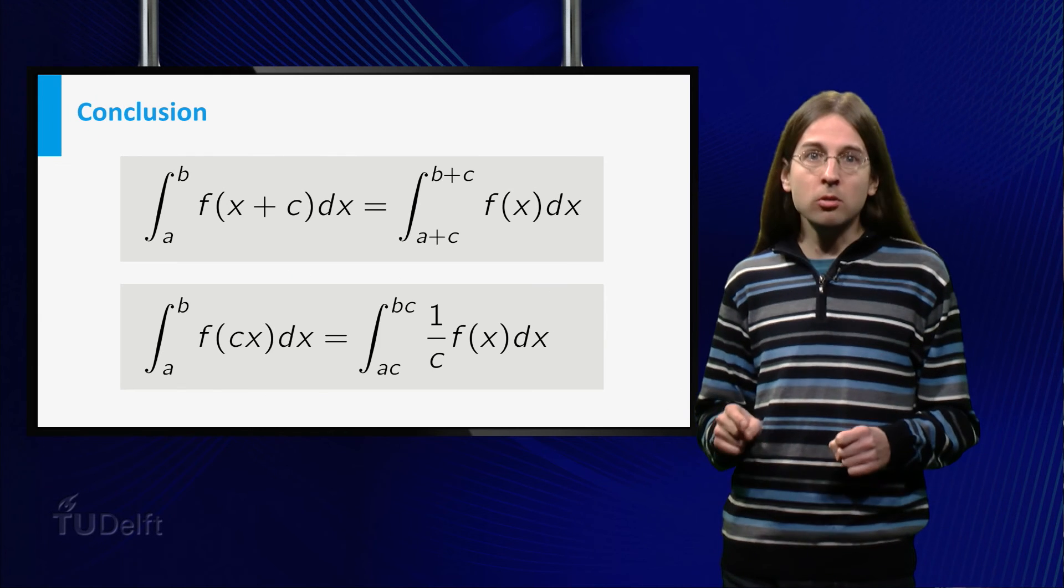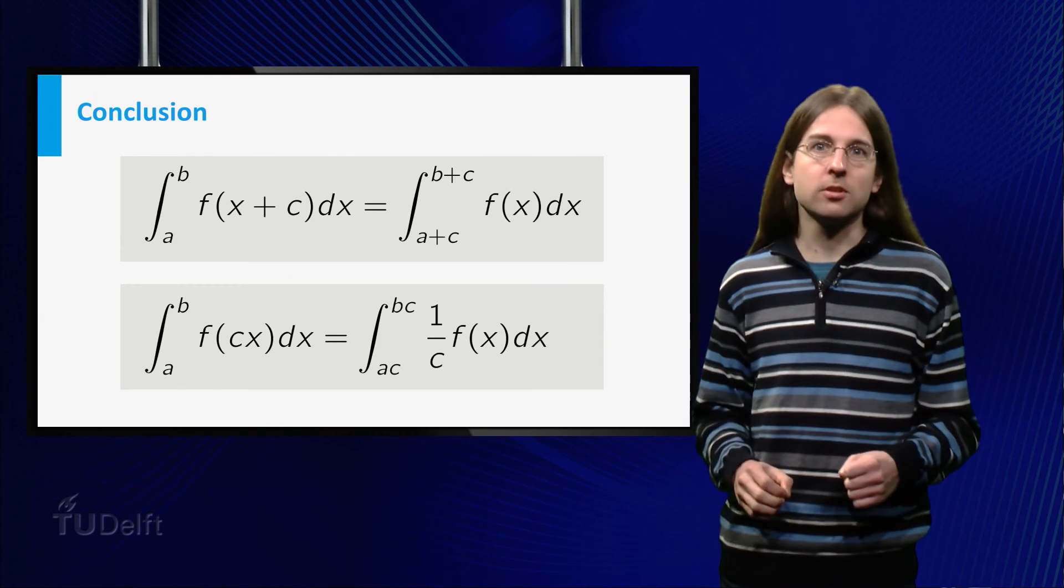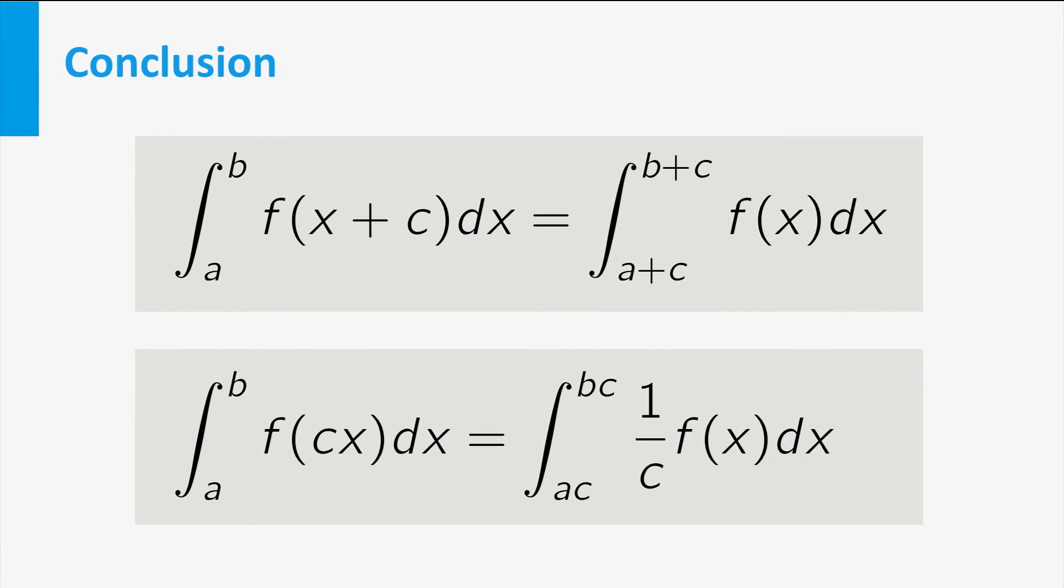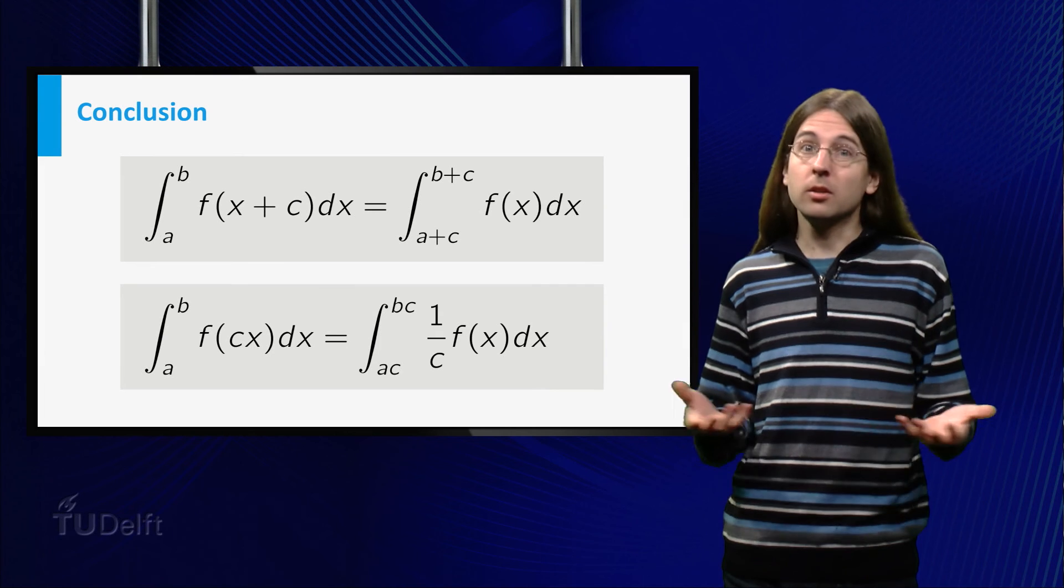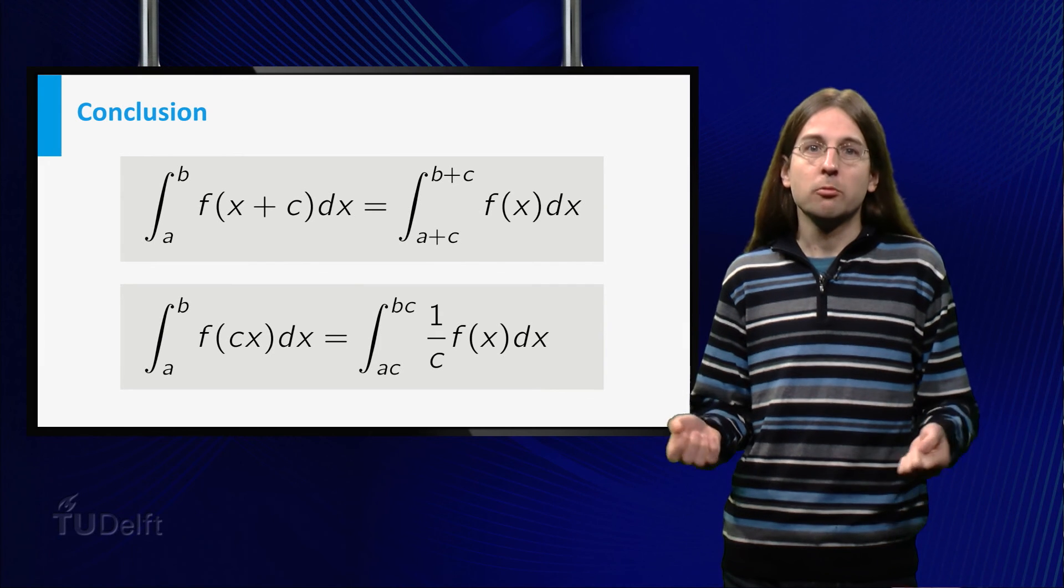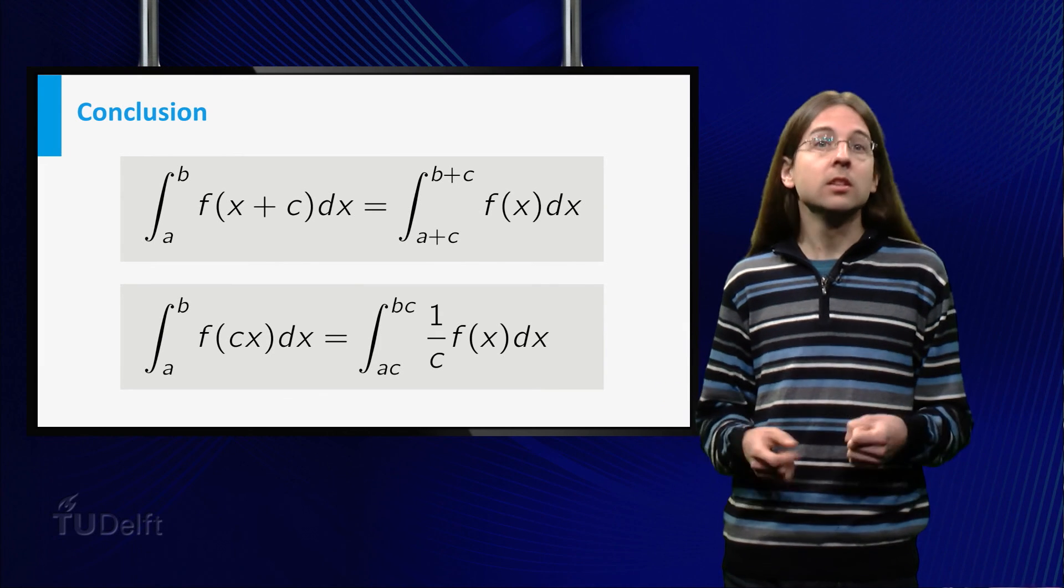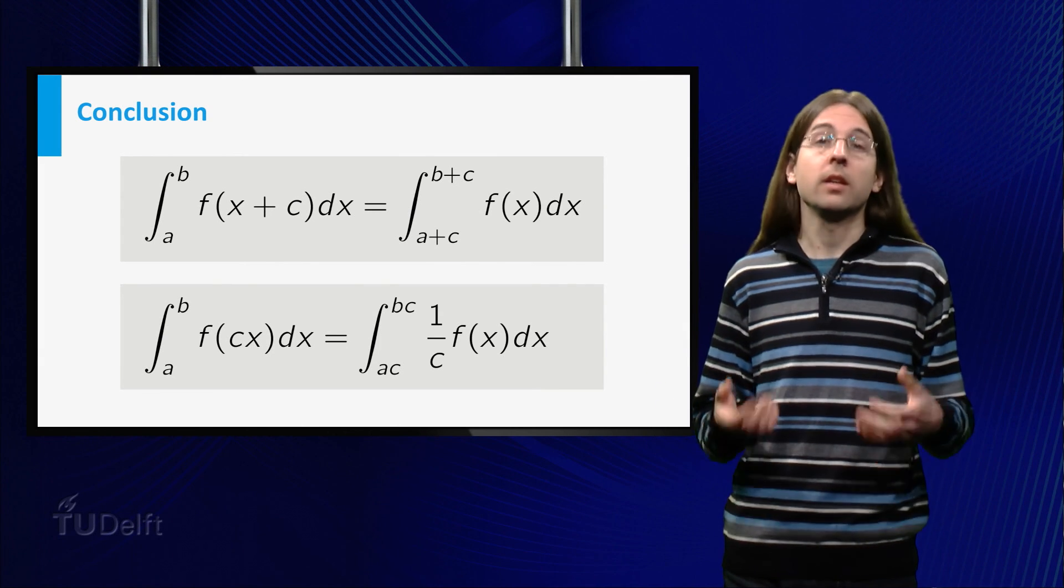Remember that this only works for linear substitutions. These rules do not allow you to calculate the derivative of functions like cosine x squared, where we plug a non-linear function, such as x squared, into the cosine.